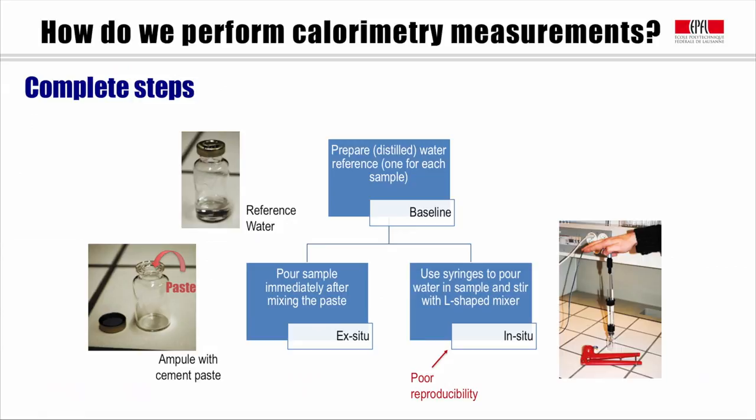As the name implies, in the case of ex situ, specimens are cast externally and being poured inside of the glass ampoule. In the case of in situ, the specimens are mixed with L-shaped mixer inside of the ampoule placed in the channel holes. In order to get good reproducibility, ex situ preparation will be shown in this section.